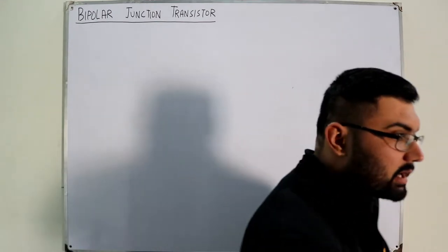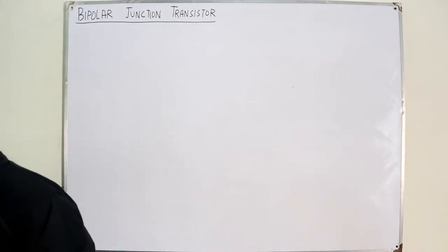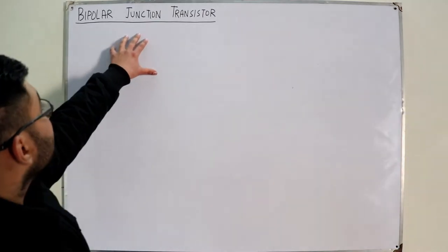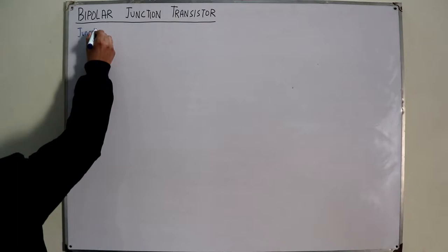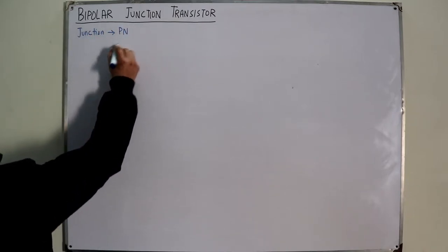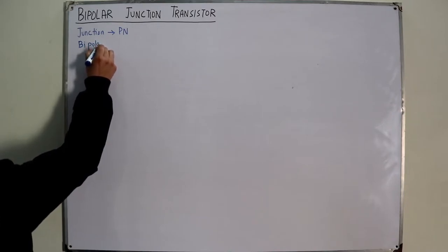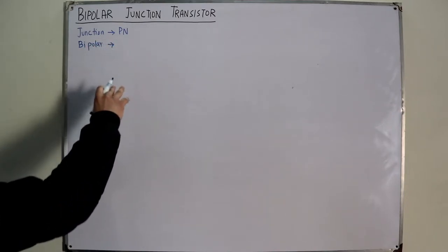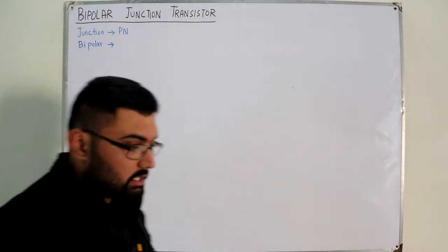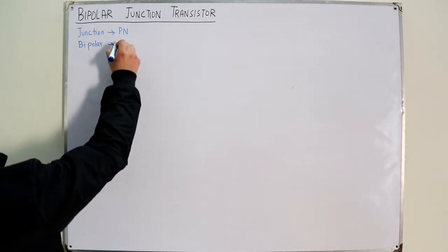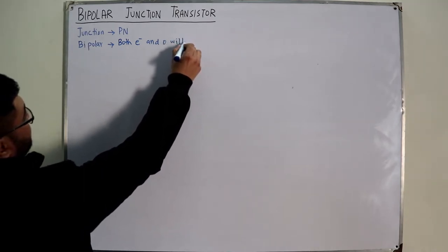The bipolar junction transistor is a step further from the PN junction diode. The term 'junction' refers to the metallurgical PN junction of the diode. 'Bipolar' means two polarities - 'bi' means two and 'polar' means polarity. This refers to the fact that both charge carriers - electrons and holes - will act as current carriers.